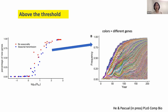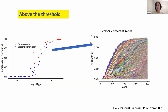Above this threshold, there is a sharp difference: new genes would be generated and don't easily get lost in the system. Rather, they persist at a low frequency for a really long time in the population, and the accumulation of new genes is really fast.